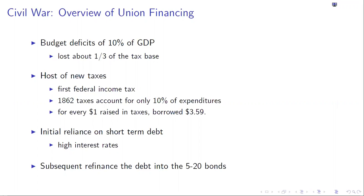It was also one of the first industrial wars in world history. It's much more like World War I than the War of 1812, fought with much more powerful weapons than the Revolutionary War or the War of 1812. Roughly 750,000 U.S. soldiers died fighting the Civil War.